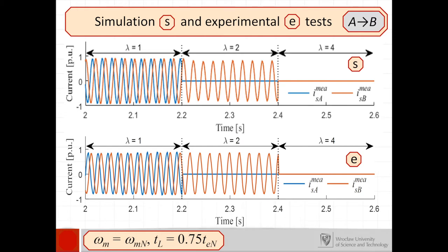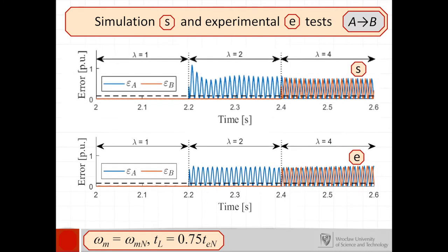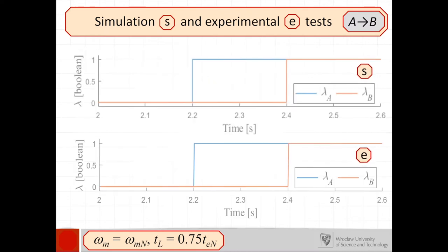The fault occurred in the steady state and as can be seen here, epsilon coefficients very quickly exceed the threshold value, established in both cases at 0.1. This allows very fast current sensor fault detection in phase A and next in phase B.